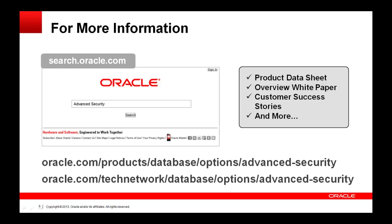In closing, Oracle Technology Network and Oracle.com publish a lot of useful information about Oracle Advanced Security. There are a couple of links shown on this slide where you can find a product data sheet, an overview white paper, published customer success stories, and much more. The customer success stories are particularly valuable — they describe many existing Oracle Advanced Security customers who use this technology to protect their critical data.